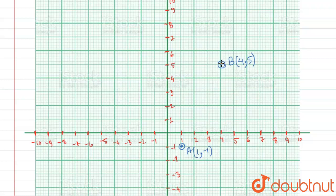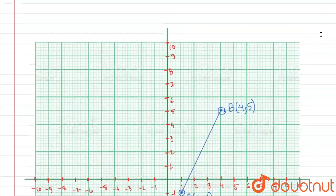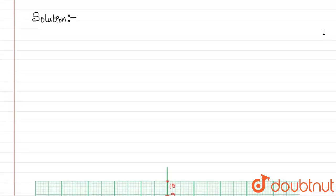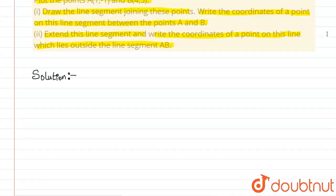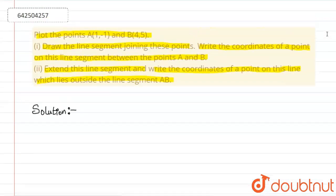Then we're going to join points A and B. We have joined them. Now we are asked to mark a point between A and B on the line segment. For that, we need to find the equation of line AB.